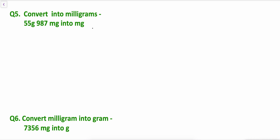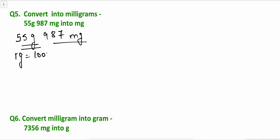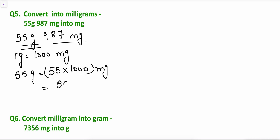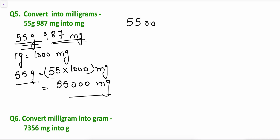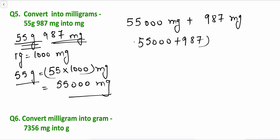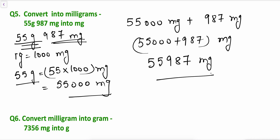Now convert 55 grams 987 milligrams into milligrams. Since 1 gram equals 1000 milligrams, 55 grams will be 55 multiplied by 1000 milligrams, which is 55000 milligrams. So 55 grams 987 milligrams equals 55000 milligrams plus 987 milligrams. Adding these, the answer is 55987 milligrams. This is the conversion.